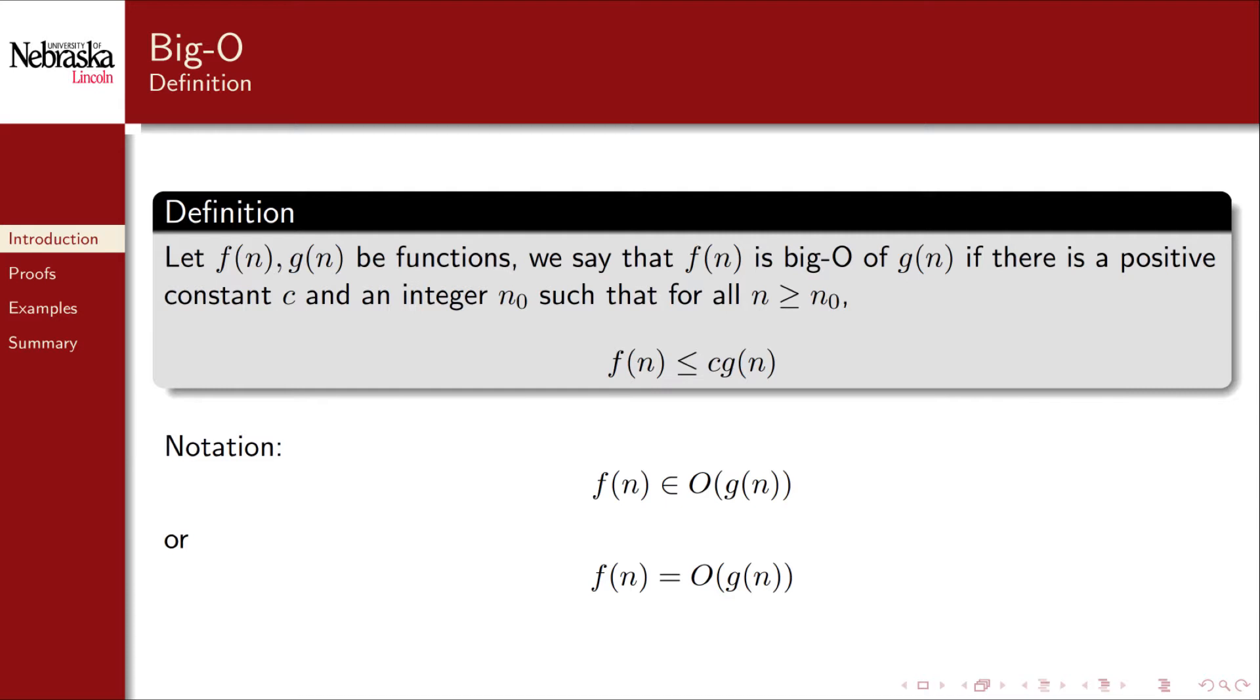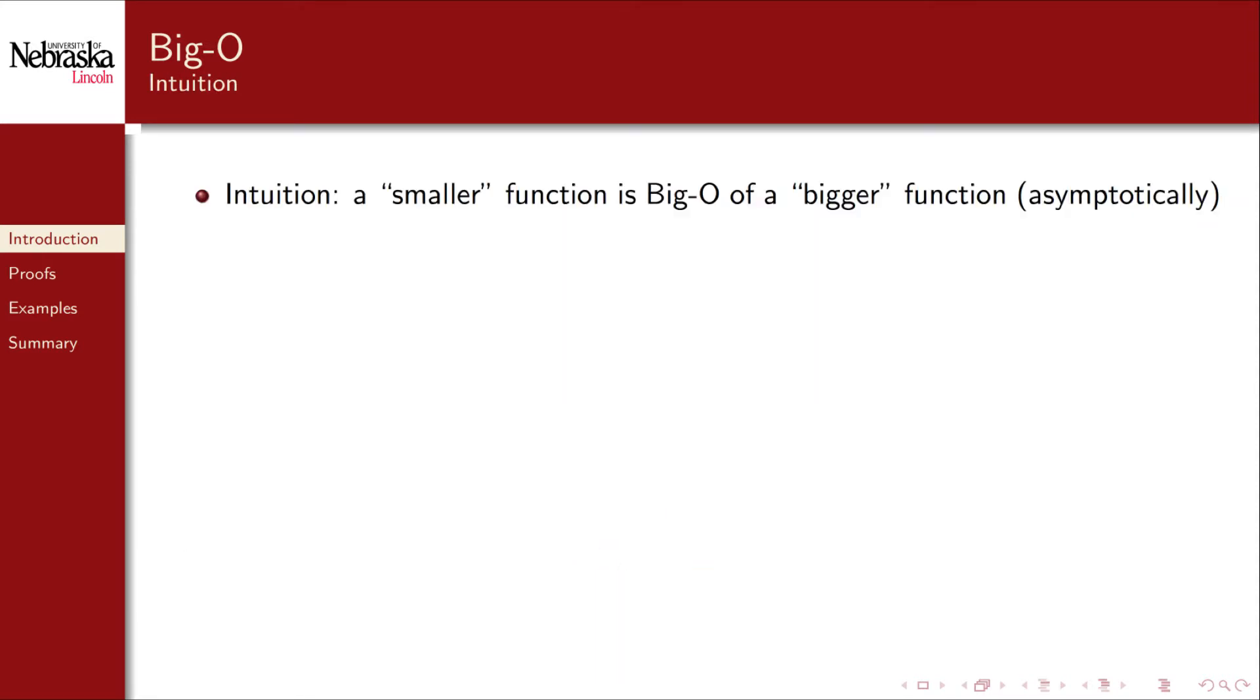The notation that we use is that f of n is in the big O class of functions characterized by g of n, or alternatively, that f of n is equal to big O of g. The O here is actually the Greek letter omicron. The first notation is more mathematically correct, as big O represents a class of functions, and f is a member of that set. The second notation is a bit of an abusive notation, but is nevertheless common.